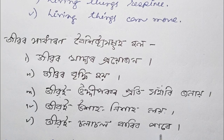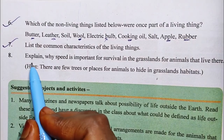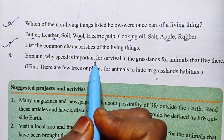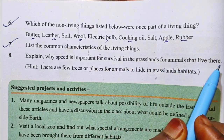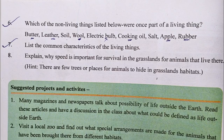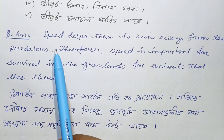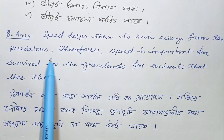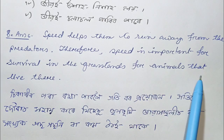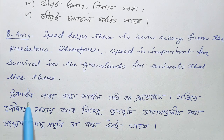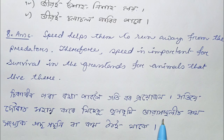Question number 8. Explain why speed is important for survival in the grasslands for animals that live there. Answer: Speed helps them to run away from predators. Therefore, speed is important for survival in the grasslands for animals that live there. In the local language: to protect themselves from predators, speed is essential for grassland animals to survive.